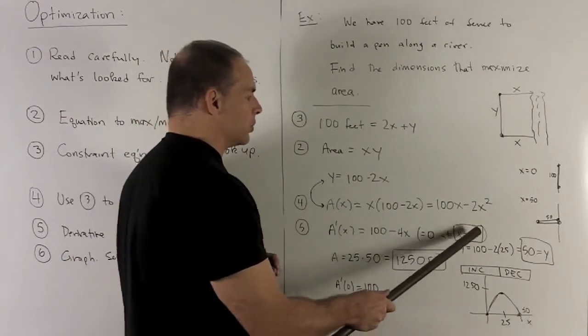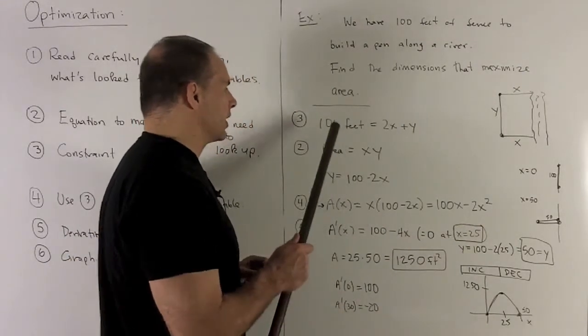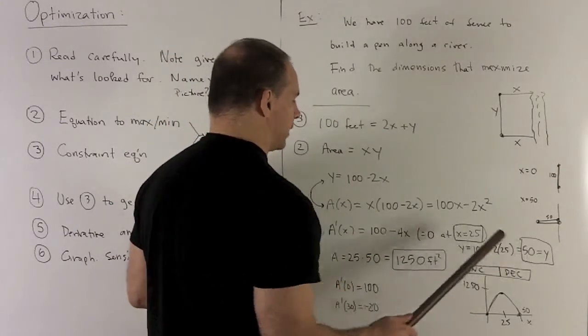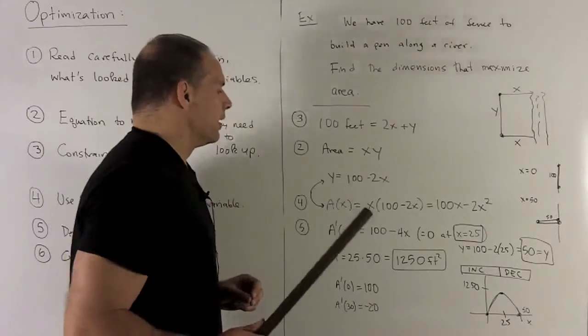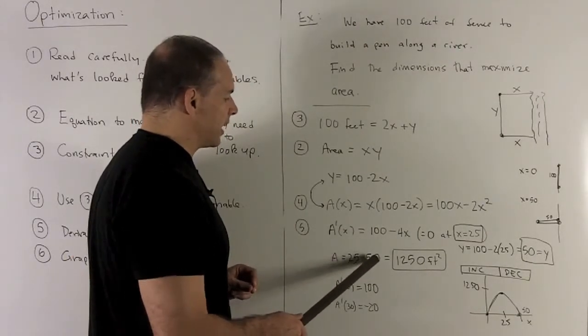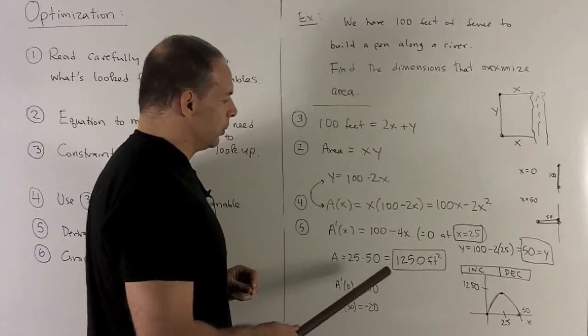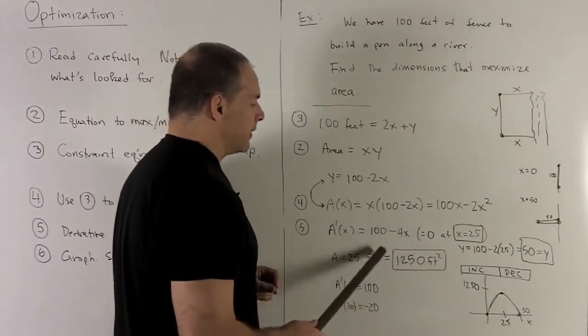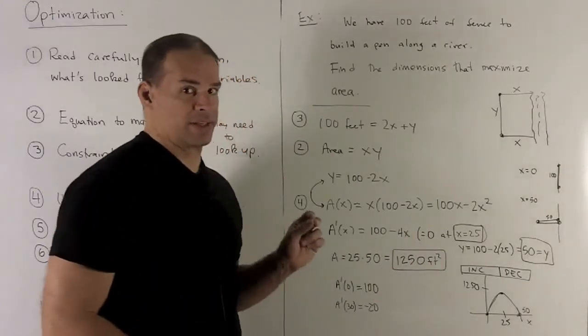Now, when x is equal to 25, I can stick that back into my constraint equation, and we see that that's going to give us y equals 50 at this point. Also, if I stick 25 into our area equation, that's going to give me 25 times 50, which is equal to 1,250 feet squared. So that'll be the maximal area, assuming that this is a maximum.